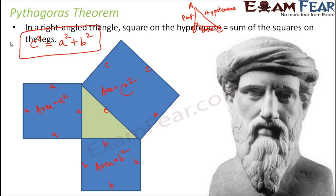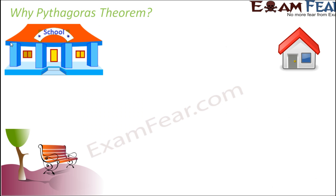As per Pythagoras theorem, in a right-angled triangle, the square of the hypotenuse is equal to the sum of the squares of the legs — the base and the perpendicular. But even before we start proving Pythagoras theorem, let us try to understand why we need this theorem and where it will help us.